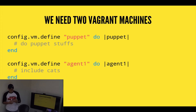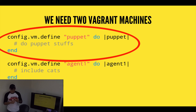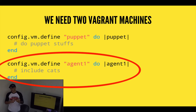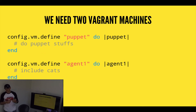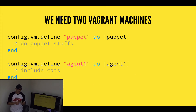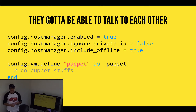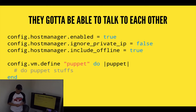We need two Vagrant machines: the Puppet Master itself and Agent 1. Agent 1 is the one that connects to the Puppet Master and accepts the Puppet configurations. They have to be able to talk to each other, so we're going to use a plugin called Host Manager to help us do that.